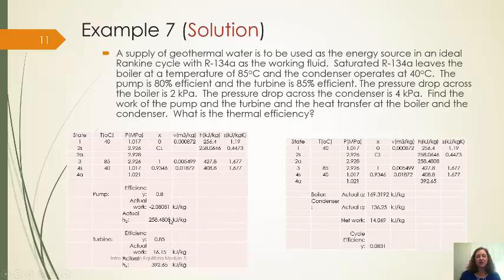There's my calculations. Once I did the ideal, I then started calculating efficiencies and actual exit states. Knowing the actual exit states, then I could calculate the actual amount of heat transfer and actual amount of work. And I found that that 10.2% efficient cycle was really only 8.3% efficient. So reality really is going to hit us hard on our thermal efficiency.